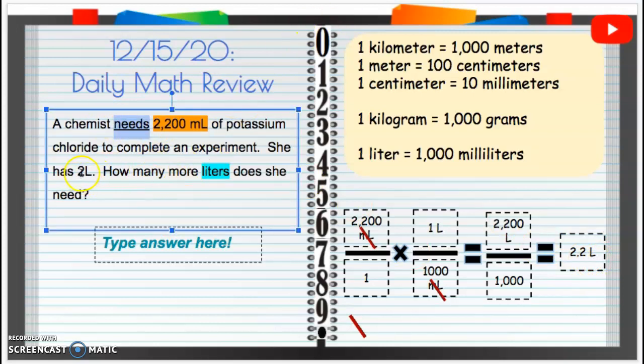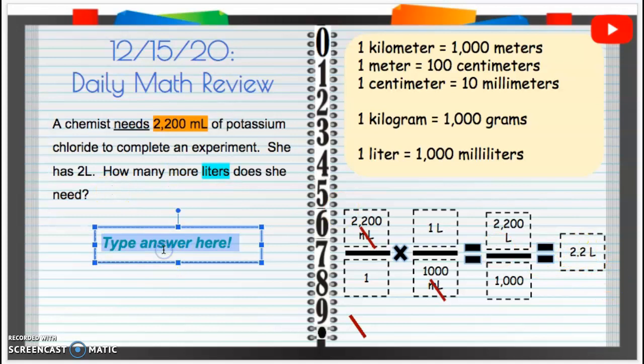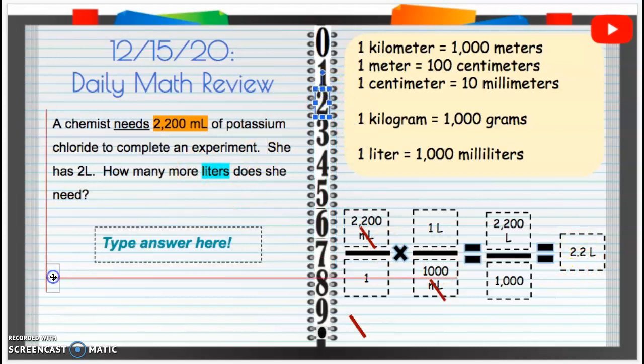She has 2 liters. So how many more liters does she need? If she has 2 liters, she's going to need 2.2 minus 2, 2 and 2 tenths minus 2, because she already has 2.